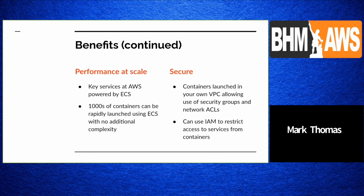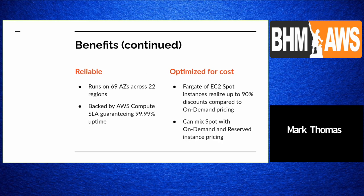You can launch thousands of containers rapidly using ECS with no additional complexity. It is a very secure service — you launch containers into your own VPC, which allows you to use security groups and network ACLs, and you can use IAM to restrict access to services from containers. ECS runs across 69 AZs across 22 regions, backed by a compute SLA guaranteeing 99.99% uptime. ECS itself is a free service — you only pay for the compute resources you use.